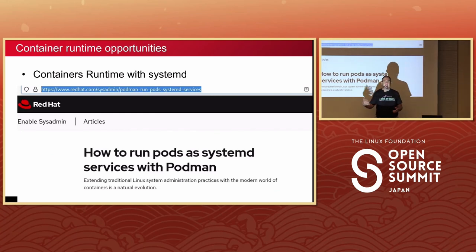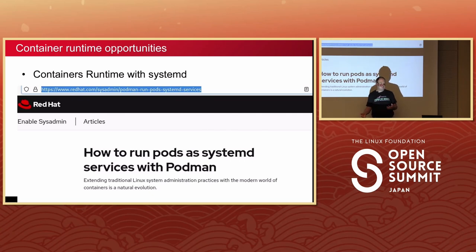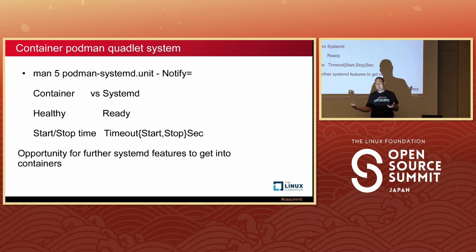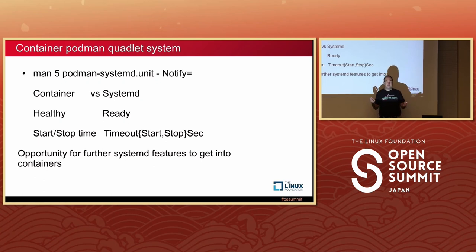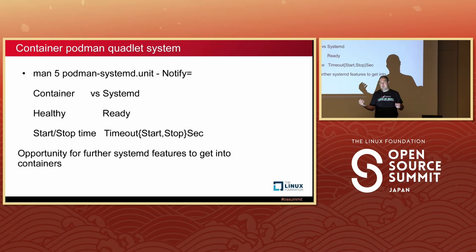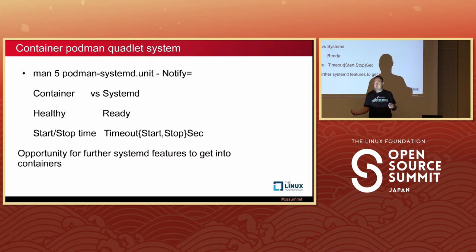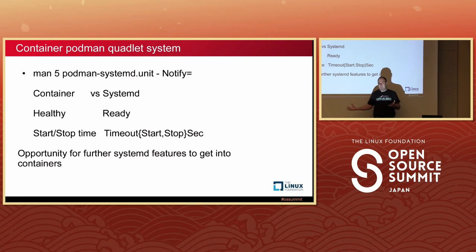Red Hat has been doing a bunch of integration between container runtimes and systemd, providing ways to run containers under systemd. There's a notify setting in the systemd service that means the container can communicate readiness signals — relevant in the systemd context as a health setting in a container context. Both runtime environments have a lot of similarities, so it makes sense that functionality that's been in systemd since around 2015 could apply to containers and simplify our process.